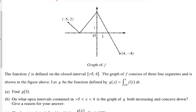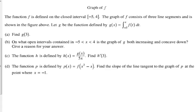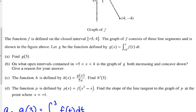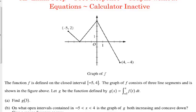For part a, they ask us to find g of 3. Let's plug 3 into that equation they just gave us. We replace x with 3. Now, they're not wanting you to find equations for f of t and integrate. What they're going to need to use is our geometric formulas to figure out the area under the curve between negative 3 and positive 3.